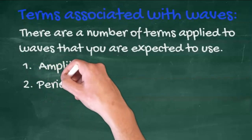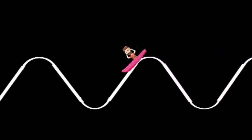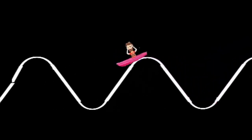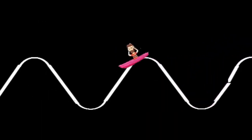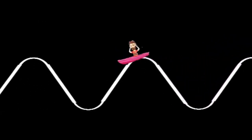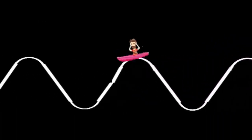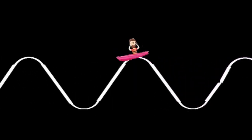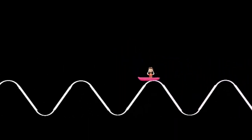If frequency is the number of waves per second, then the period is one over the frequency, or the time taken for one wave to pass a particular point. A frequency of 10 hertz would give a period of one over ten, or a tenth of a second.